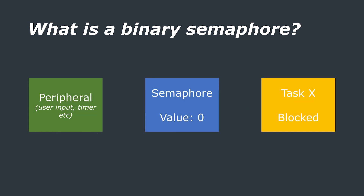Let's use an example of how you could use a binary semaphore. Imagine that we have a task that is to service a peripheral. The task could constantly poll the peripheral, but this would be a waste of available CPU resources. Instead, we would want the task to remain in the blocked state for as long as possible until it actually has something to do. Whilst the task is blocked, other tasks are able to run, making more effective use of the CPU resources.